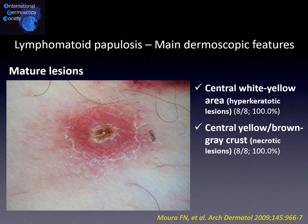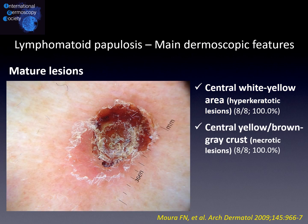Turning to mature lesions, we may basically have two main dermoscopic findings: namely a central white-yellow area in hyperkeratotic lesions, or a central yellow-brown-grey crust in necrotic lesions. Additionally, we may also see collarette scaling and peripheral vessels, even though these findings are less common and less specific.